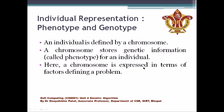A chromosome is expressed in terms of factors defining a problem — the chromosome will encode all the factors which define the problem. An individual is sometimes called a chromosome or solution. The chromosome is defined by the individual, which is part of the population, carrying that genetic information.